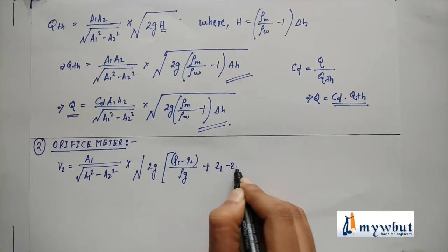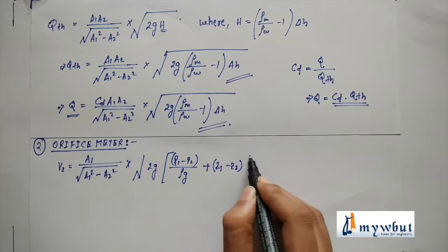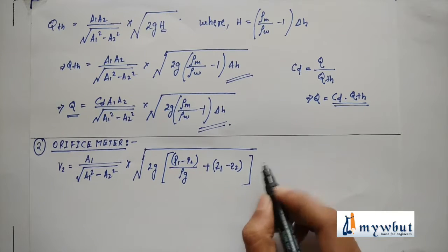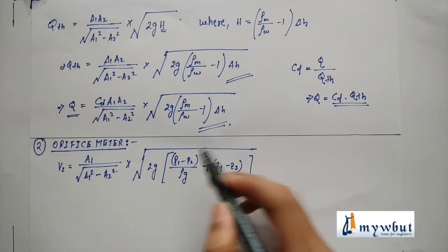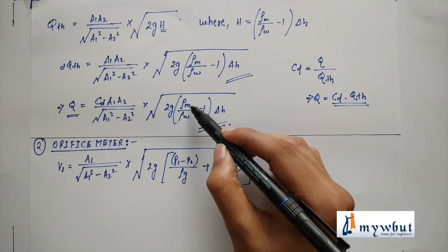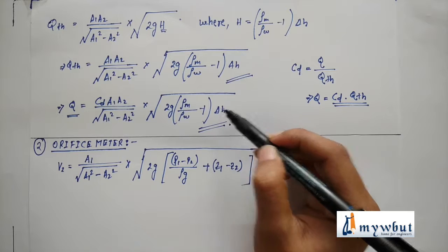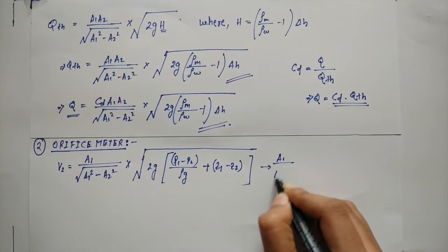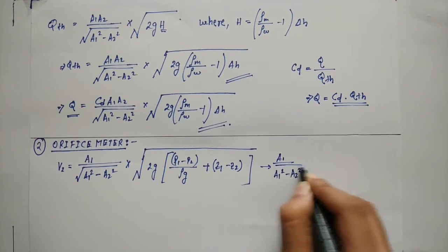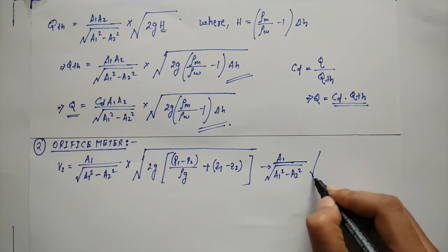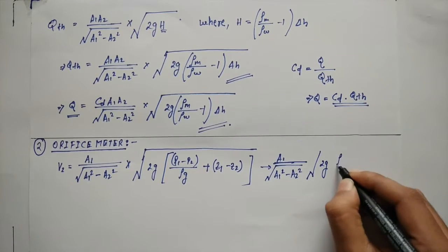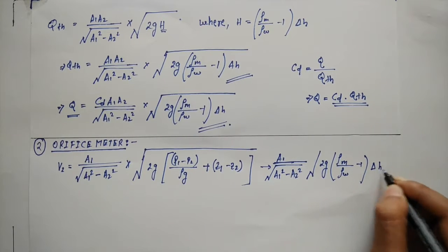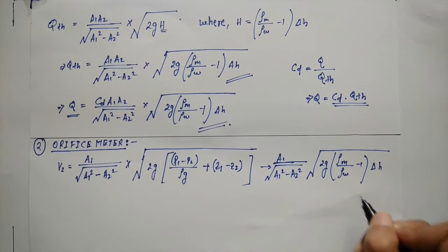Plus z₁ minus z₂. We have found this value as 2g into (ρₘ by ρw minus 1) into Δh. So this value becomes a₁ by root over a₁ square minus a₂ square into 2g into (ρₘ by ρw minus 1) into Δh.